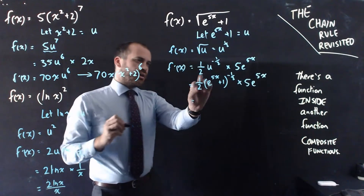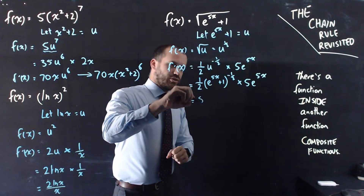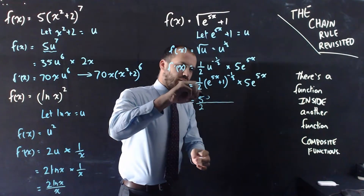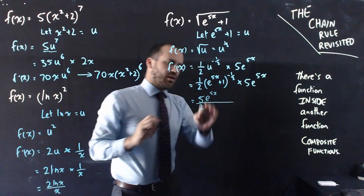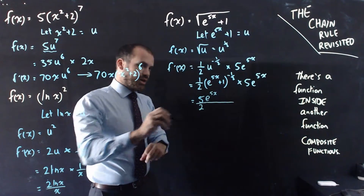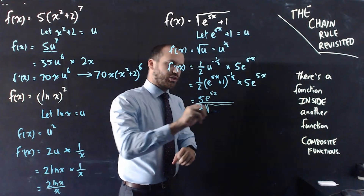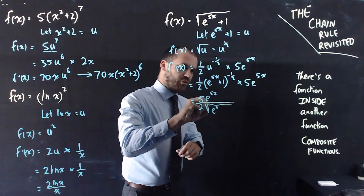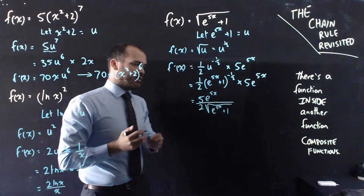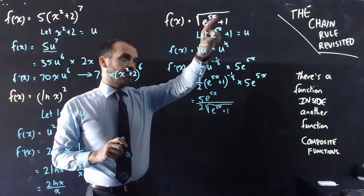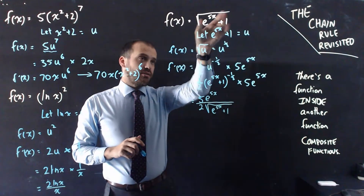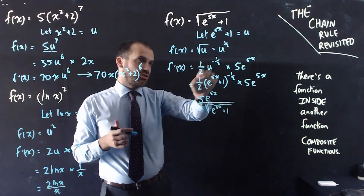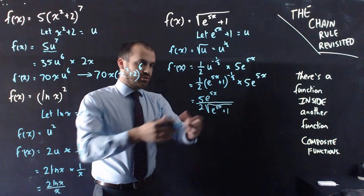Going one more line: 1 half times 5 is 5 over 2. Bringing e to the 5x over, and since negative 1 half means a square root in the denominator, we get 5 e to the 5x over 2, all over the square root of e to the 5x plus 1. So to summarise: find the funky bit, let that be u, find the derivative of the function in u, find the derivative of the thing you let equal u, and then you've got your answer.